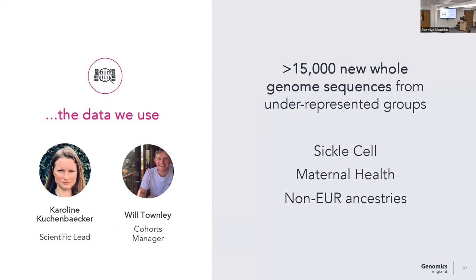Our main data generation priority areas are sickle cell — one of the most common but neglected genetic conditions in the UK — and maternal health, which has very poor outcomes particularly by ethnicity. That isn't exclusively due to genetic causes, so we want to help disaggregate biological from social determinants of those outcomes. More generally, we are doing whole genome sequencing for individuals of non-European ancestries across a range of different ancestries, because no matter where you look — particularly individuals of African ancestry — sample sizes remain too small to do meaningful new analyses.